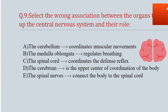Question No. 9. Select the correct association between the organs that make up the central nervous system and their role. Options are: A. The cerebellum coordinates muscular movements. B. The medulla oblongata regulates breathing. C. The spinal cord coordinates the defense reflex. D. The cerebrum is the upper center of coordination of the body. E. The spinal nerves connect the body to the spinal cord.